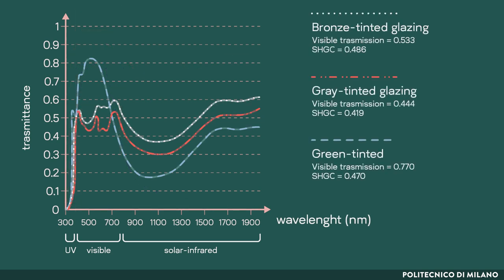Tinted glass changes the solar spectrum. If the glass is bronze or grey, light quality is little altered, but the low light transmittance leads to an increase in window surface, which outweighs the benefit of a low SHGC. In order to reduce the problem of high solar gains in buildings, spectrally selective glass, which can attenuate the infrared component of the solar spectrum while maintaining good transparency to visible radiation, can be adopted.